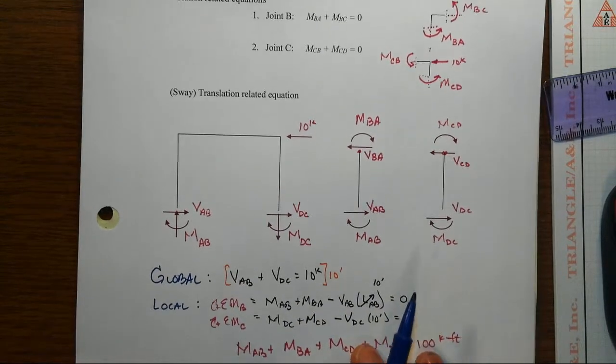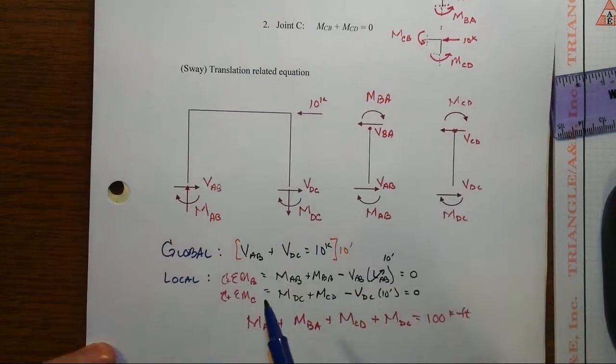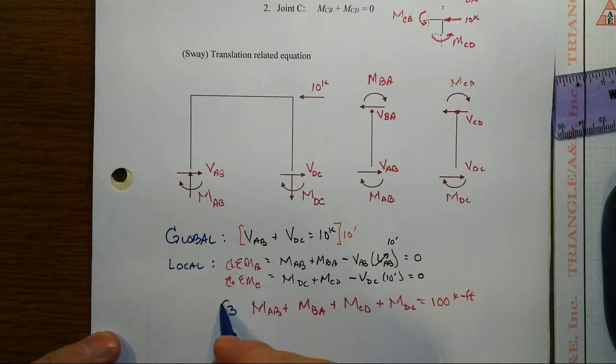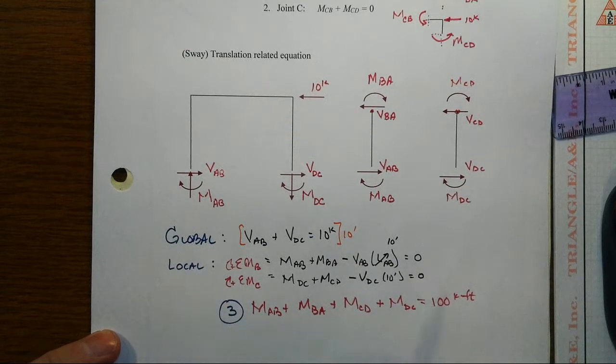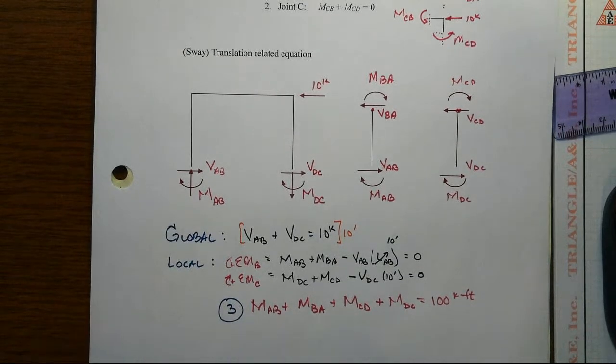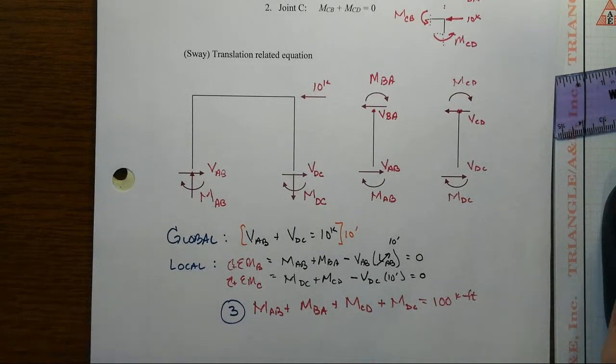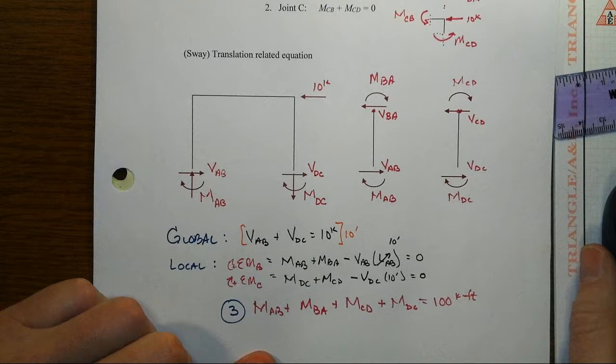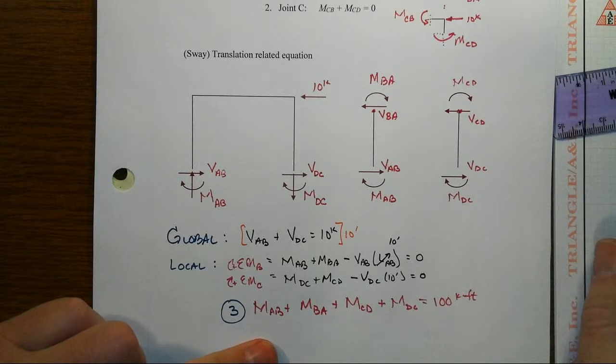And that will be then our series of equations. We had one and two up at the top. And then by combining cleverly the global and the local equations, we get our third equation.